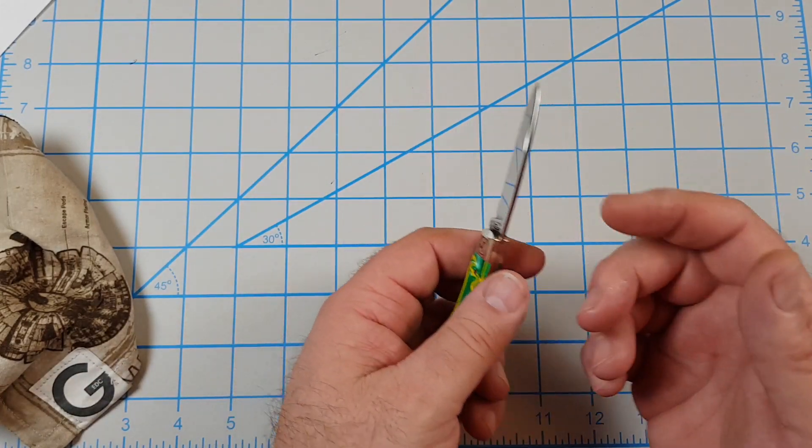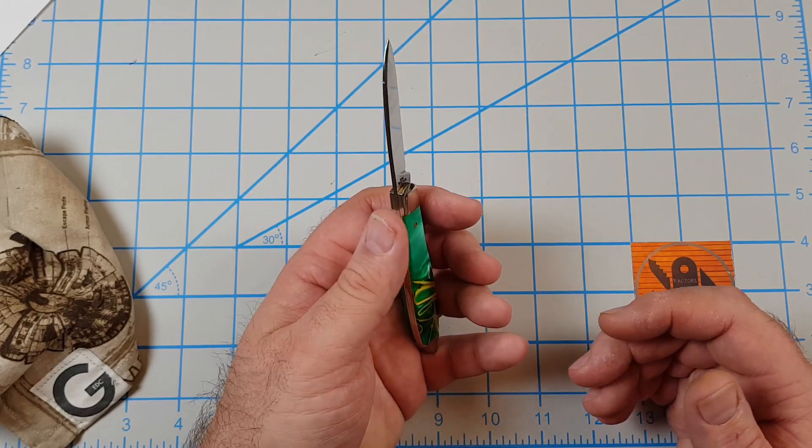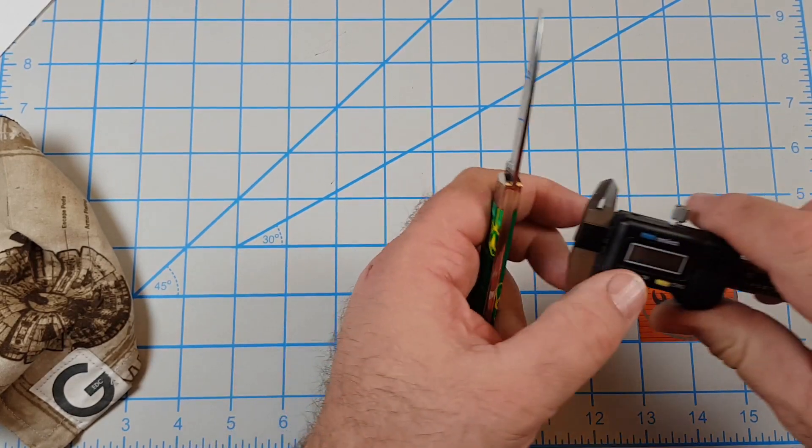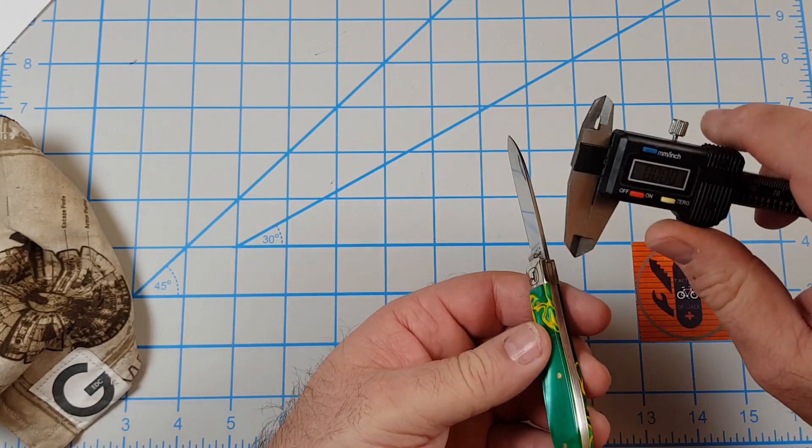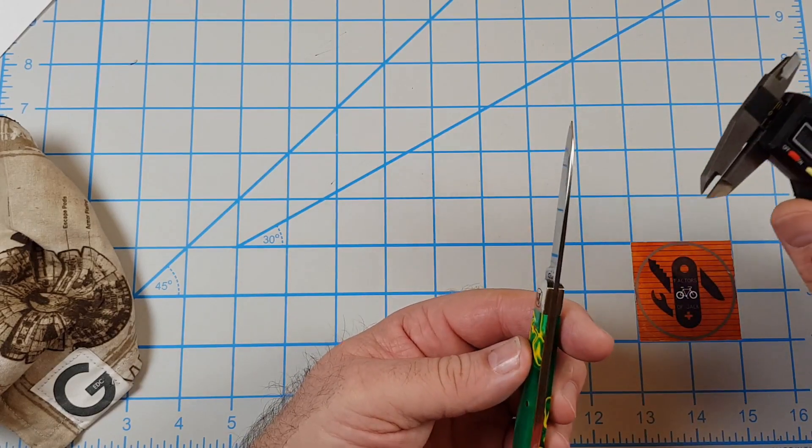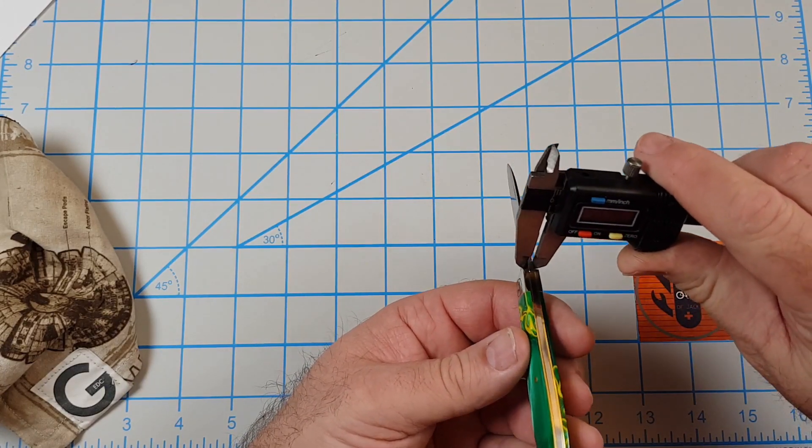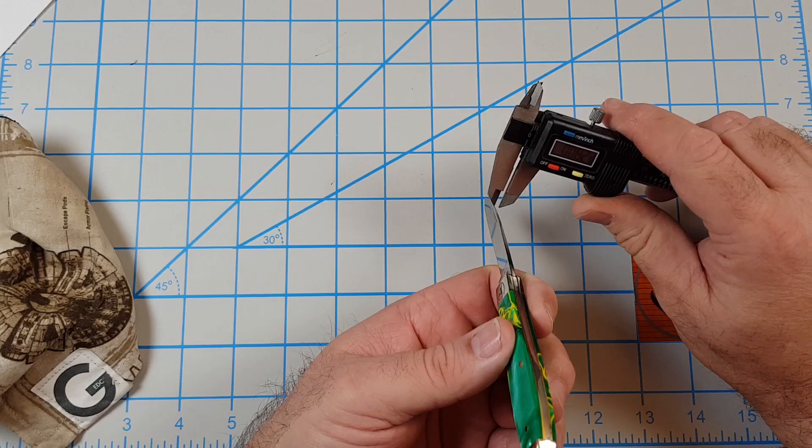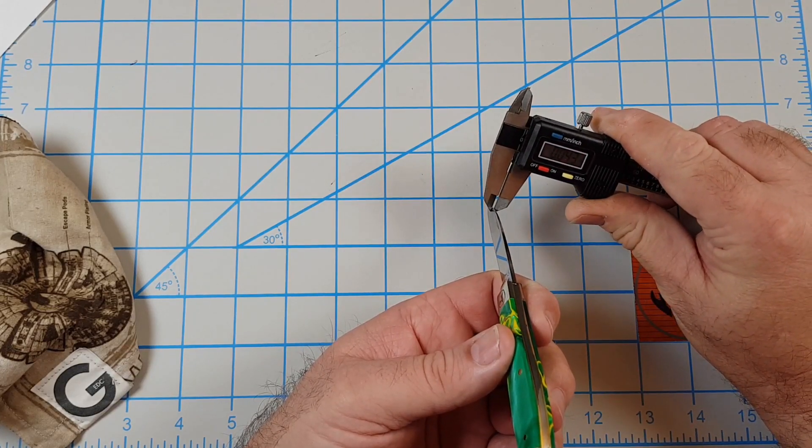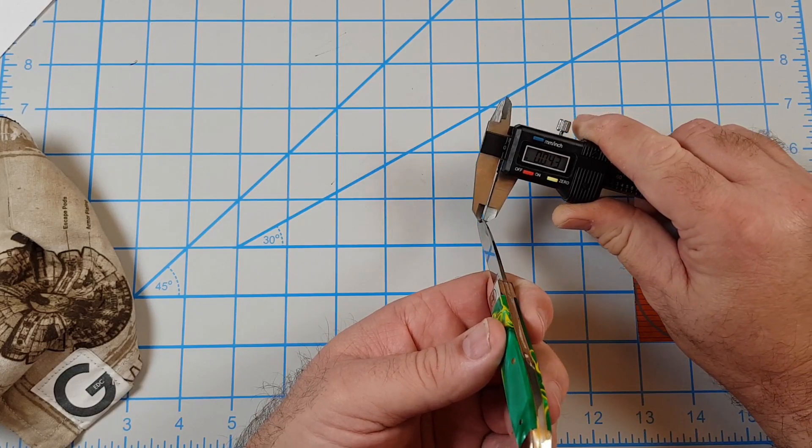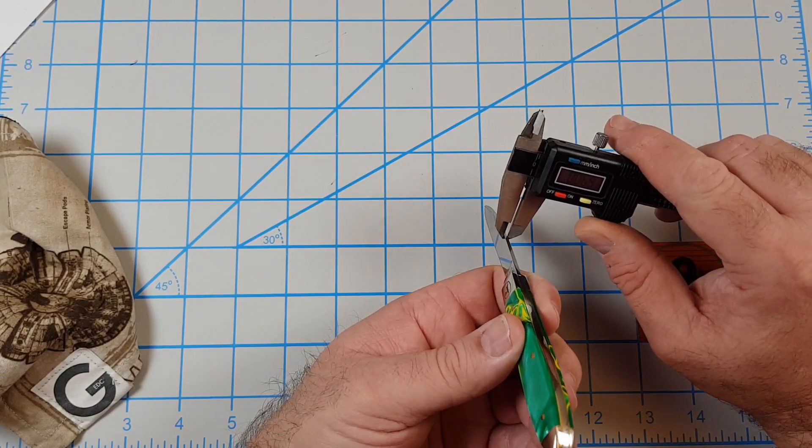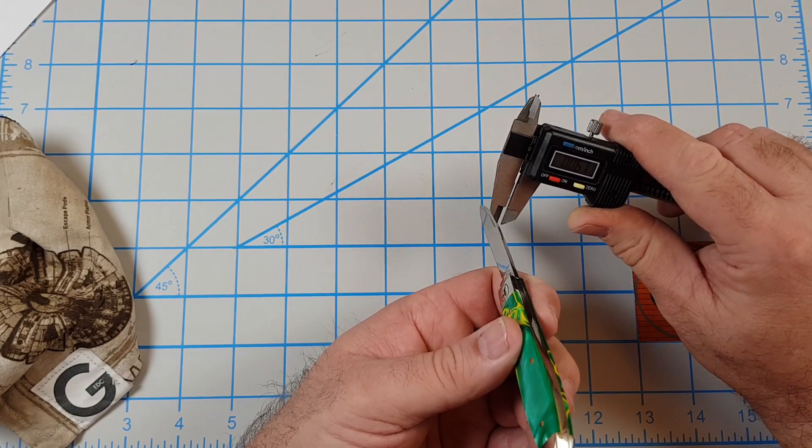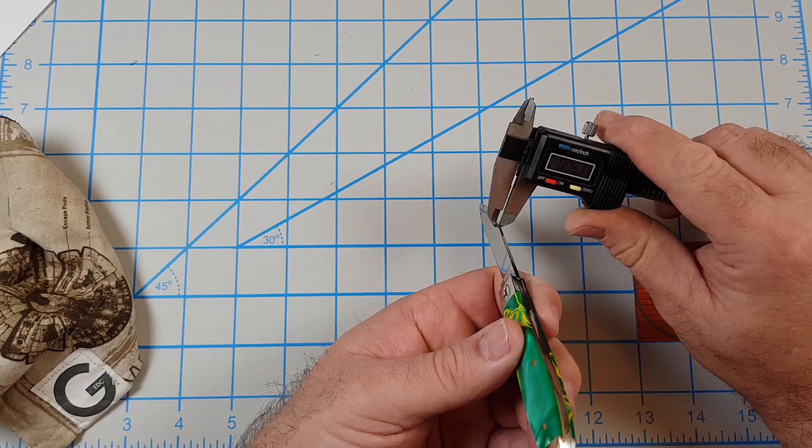It's got a really thin blade stock too. It's listed at 0.063. The thickest part is back here - I actually get 0.082. Down towards the tip, 0.043. Right about there, 0.067, 0.062. I don't know at what point of the blade they measure that.